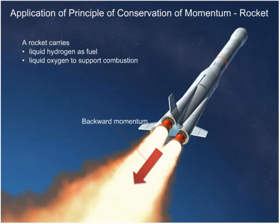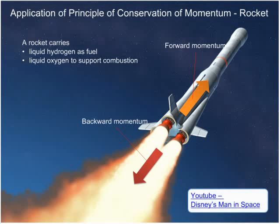By conservation of momentum, an equal and opposite momentum is produced and acts on the rocket, pushing the rocket upwards. A more detailed explanation is given in a video called Disney Man in Space on YouTube.